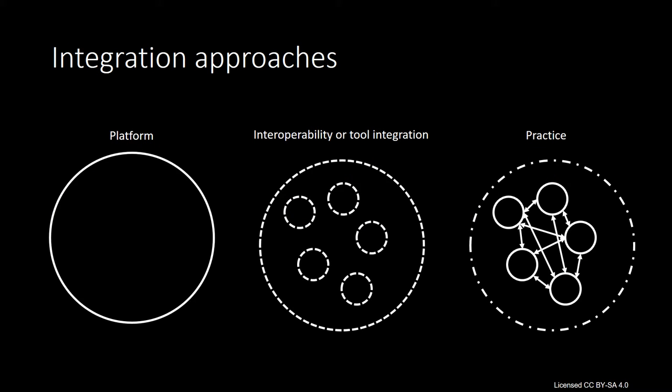They consider all aspects of digital habitats, but I will highlight one of the key distinctions that they make — that is the distinction between the integration of habitat features as being through the platform, through interoperability, through the use of integration tools, or through practice. In platform integration, the platform contains everything that is needed for the community. Tool interoperability allows us to use tools from different systems that communicate using APIs. Integration tools such as Zapier and IFTTT allow us to construct integrations between tools. Finally, integration through practice relies on common practices such as naming conventions and hashtags to create linkages between tools.